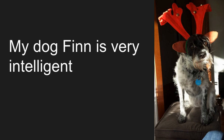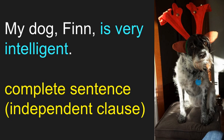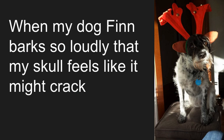Here's another example: 'My dog Finn is very intelligent.' Do we have a fragment, a run-on, or a sentence? This is a complete sentence — an independent clause. 'Is' is our verb, the very important linking verb. What's Finn doing? She is — she's being very intelligent. And that is true of my dog Finn.